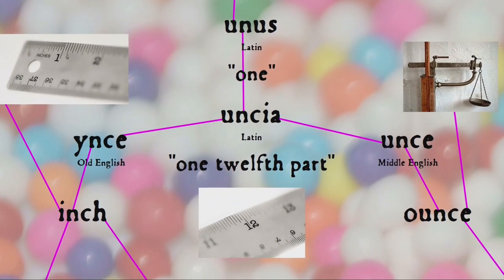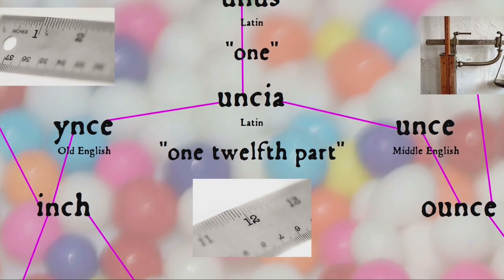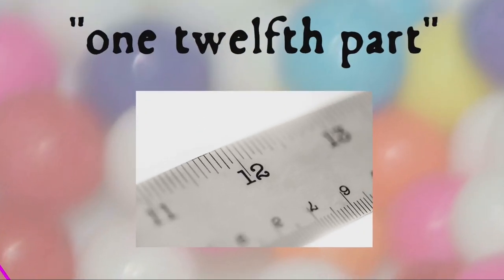Inch and ounce were both borrowed into English from Latin 'uncia' at different times — first in pre-Old English Germanic, and then again in Middle English — and so the words underwent different sound changes over the years. One inch is a twelfth of a foot.